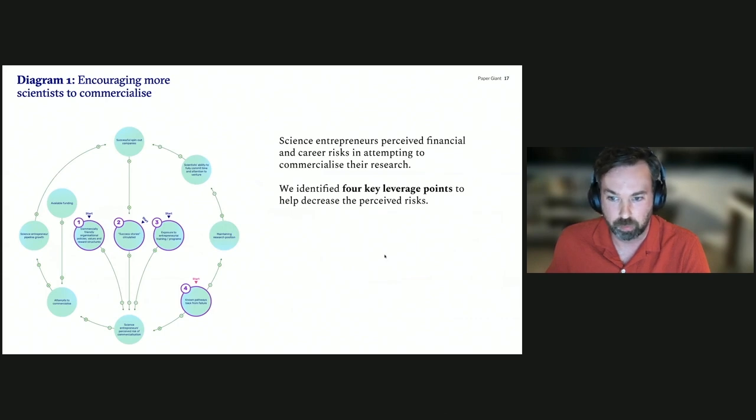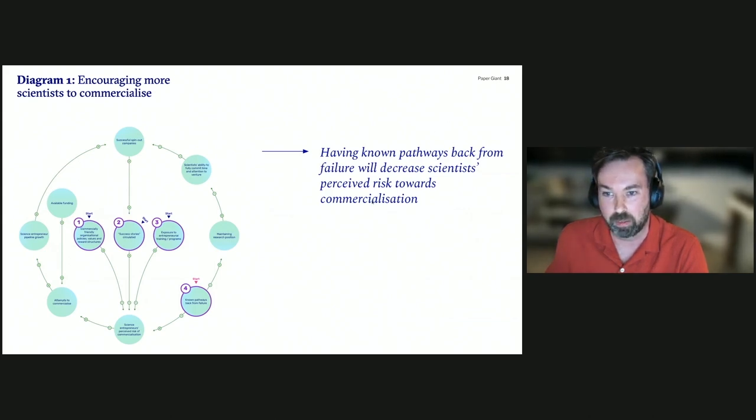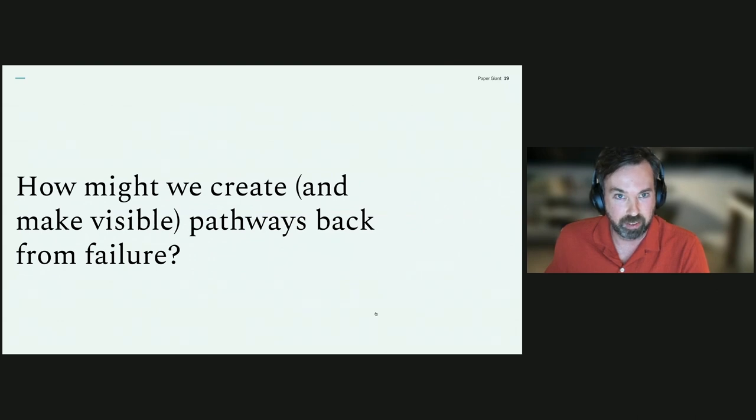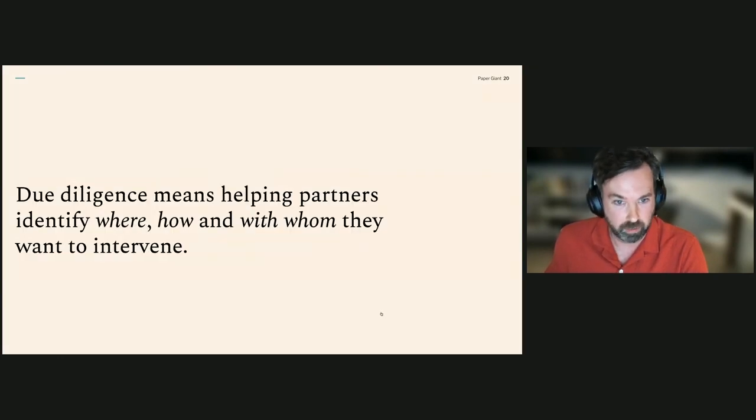Very quickly finding the right leverage point. So let's zoom into one of these diagrams a bit more carefully. So I mentioned the perceived risk was a major barrier to many different types of science entrepreneurs getting started. We found four leverage points that feed into that perception. And through essential co-design workshops with Liz and her partners, we were able to help identify one leverage point that we wanted to make the biggest difference in, which was helping create known pathways back from failure, which people were really worried about. They were giving up often very long lived careers in big organizations to take a risk. They wanted to know that they could come back if it didn't work out. Once you understand that you can create platforms for co-design through questions like this. How might we create those pathways or how might we make them more visible? And so the key point here is that due diligence means helping partners identify where, how, and with whom they want to intervene and make strategic decisions around that.